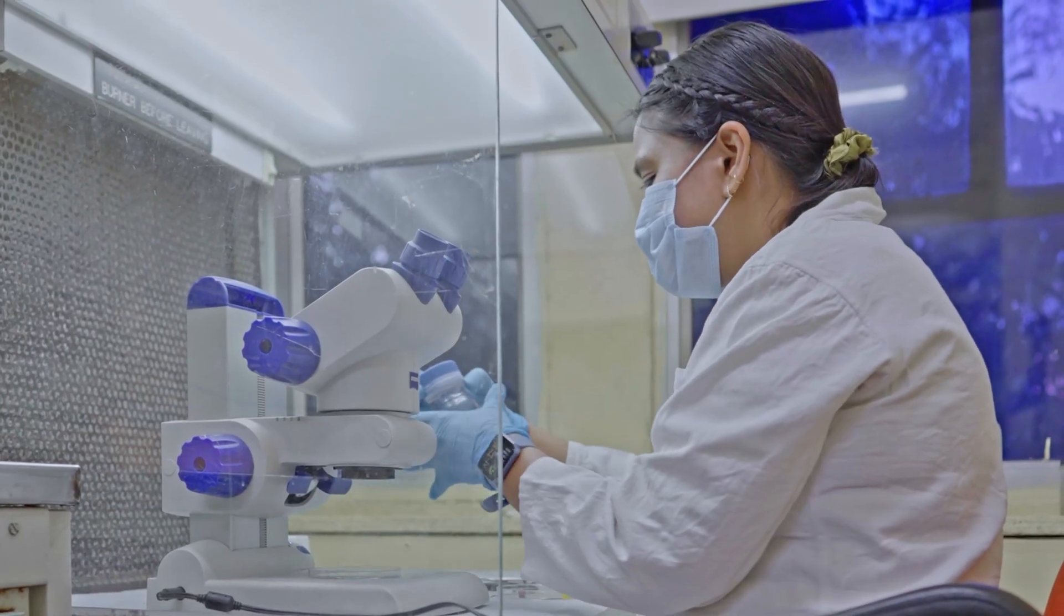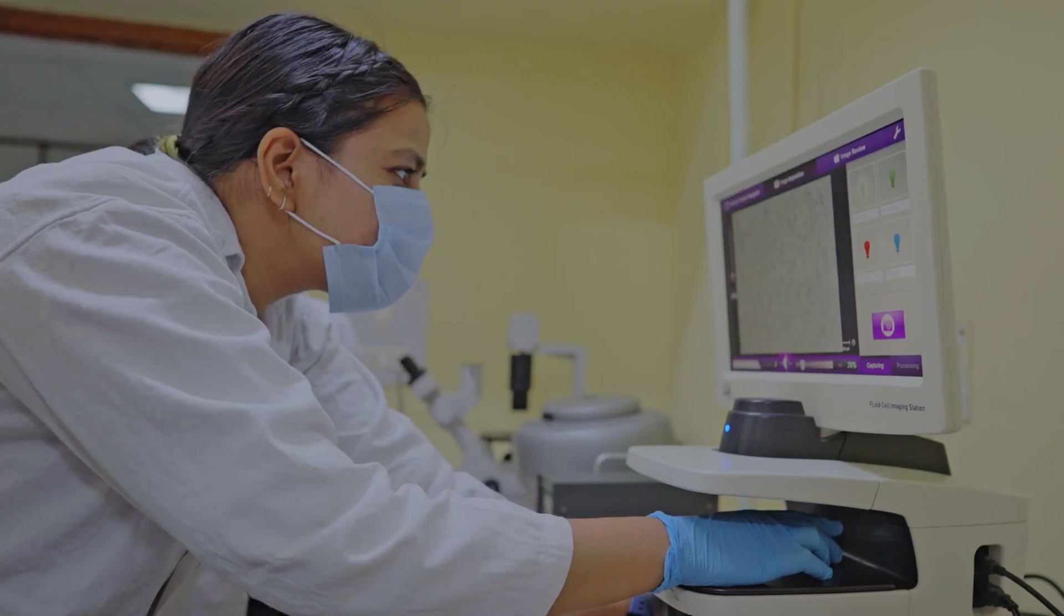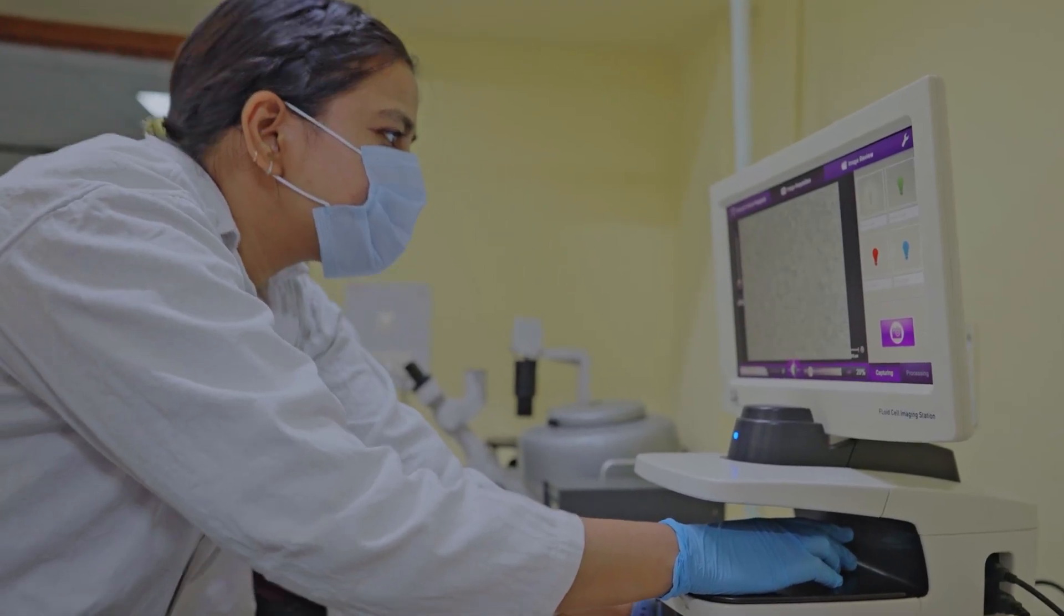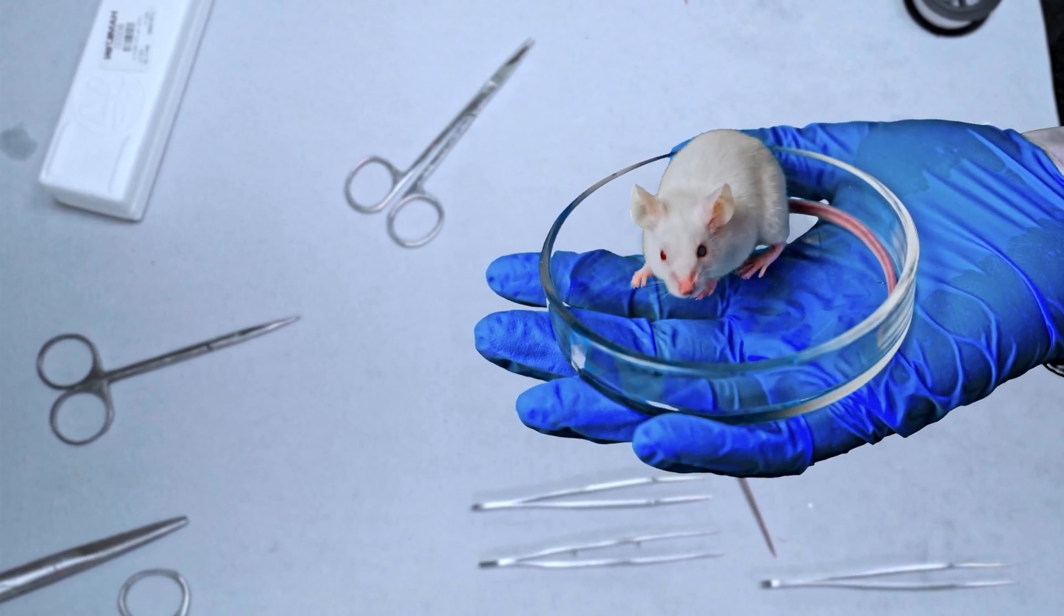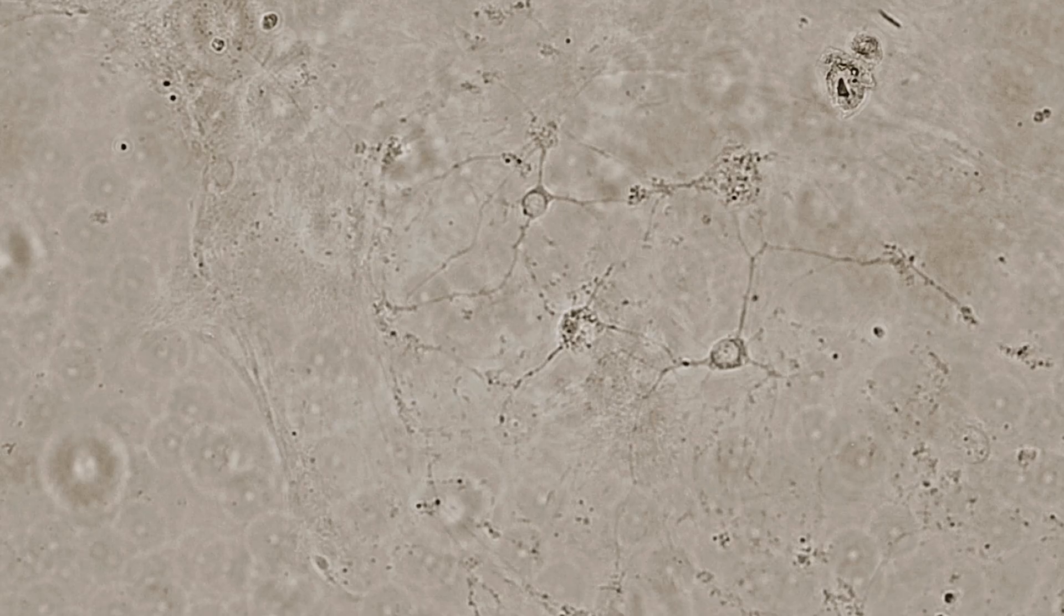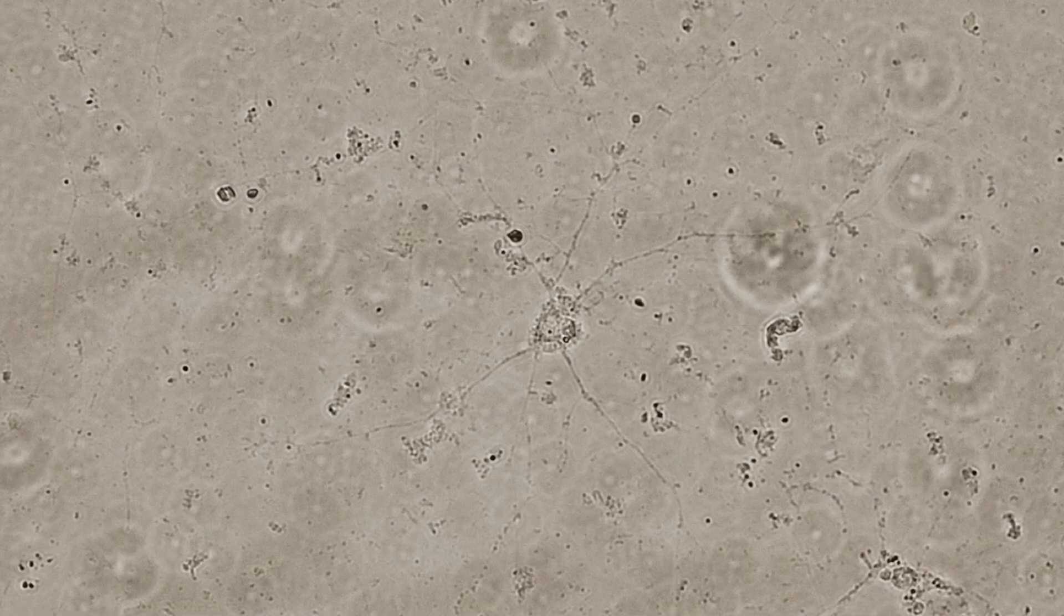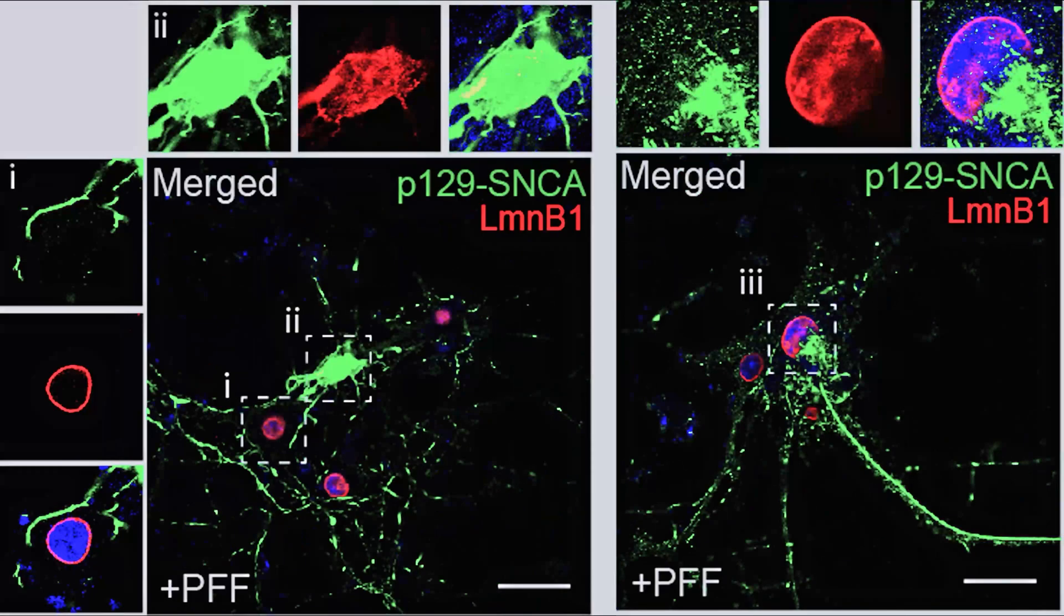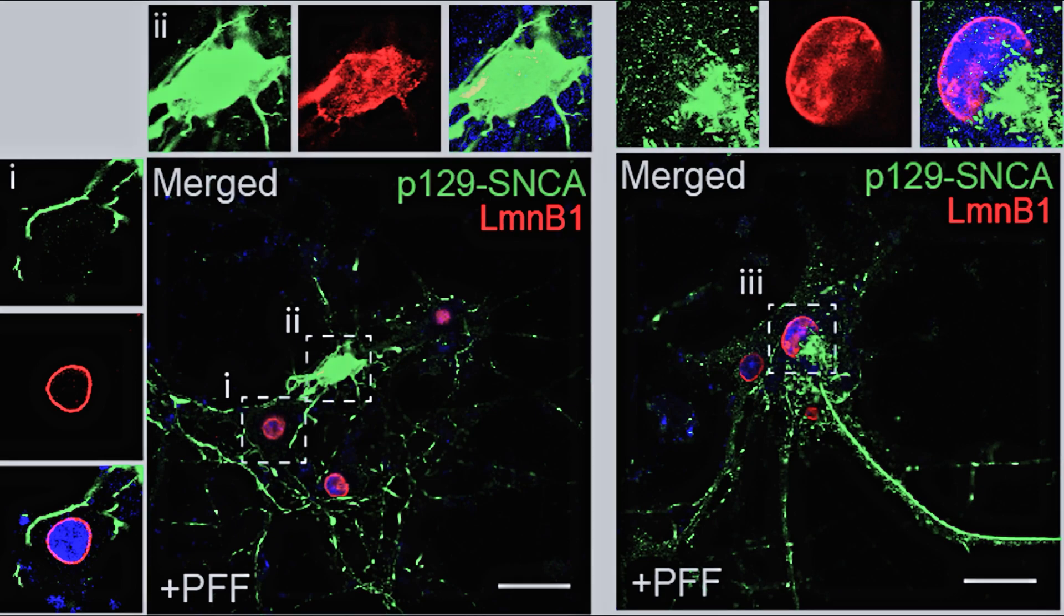We are trying to understand how these aggregates affect or cause protein homeostasis disturbances. We are modeling these protein aggregates in primary neurons which are isolated from mouse brains or human induced pluripotent stem cells. What we have shown is that these aggregates interact with the nuclear envelope and destroy the nuclear lamina, and that is one of the main causes of the disease.